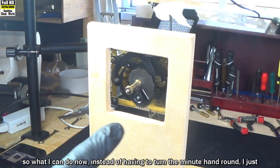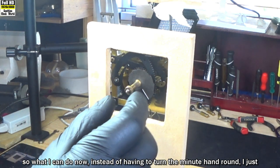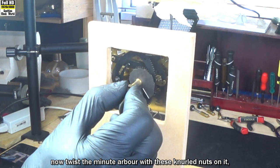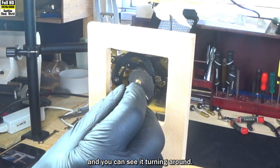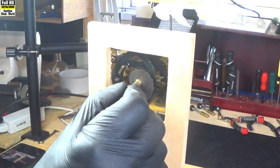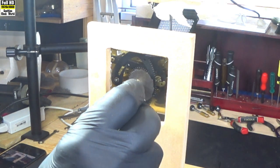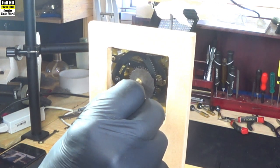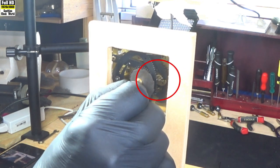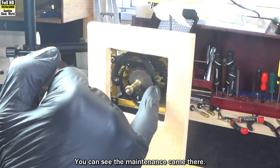So what I can do now, instead of having to turn the minute hand round, I just twist the minute arbor with these knurled nuts on it. You can see it turning around. I'll turn it slowly - that was a half hour - and then I turn it a bit more. We'll turn it up towards the hour. Just gone into warning, you can see the maintenance cam there.